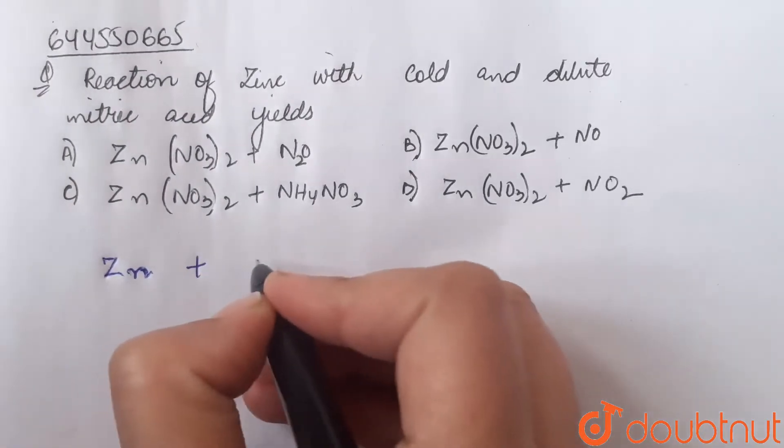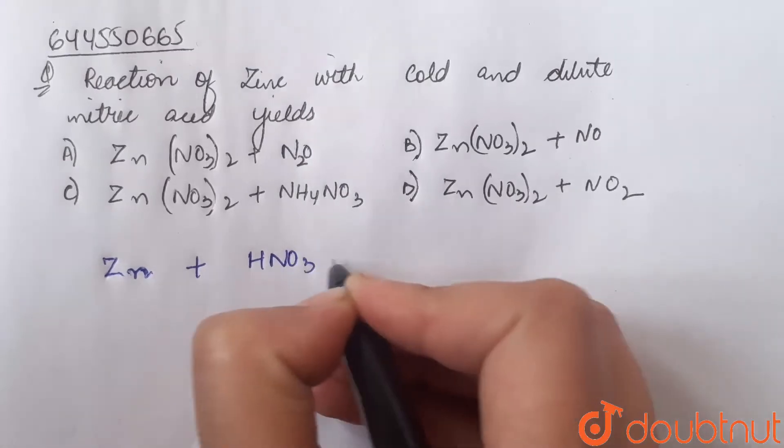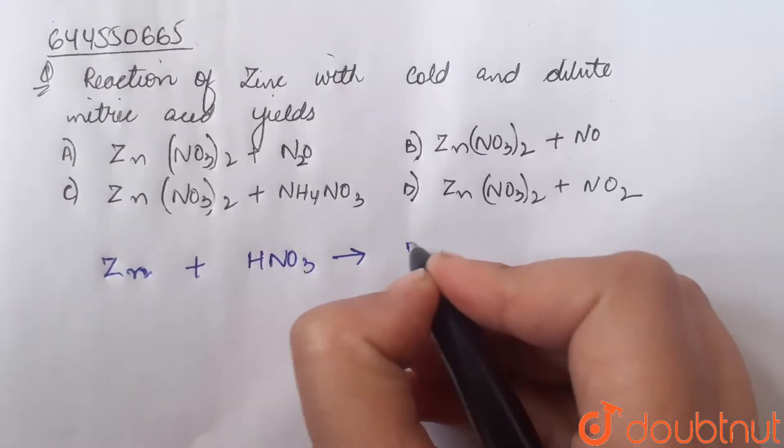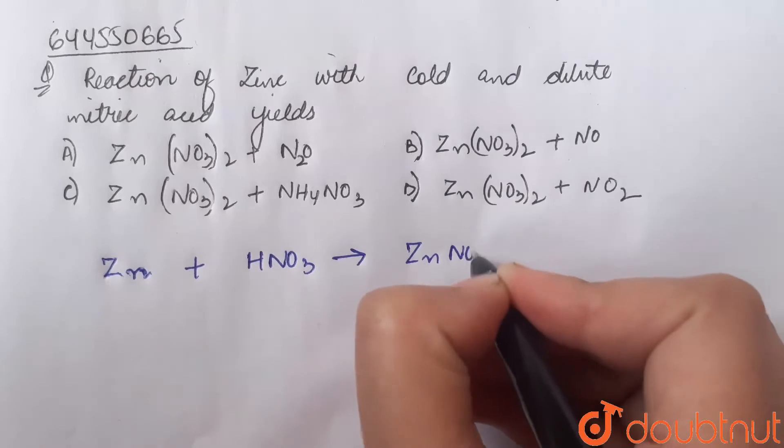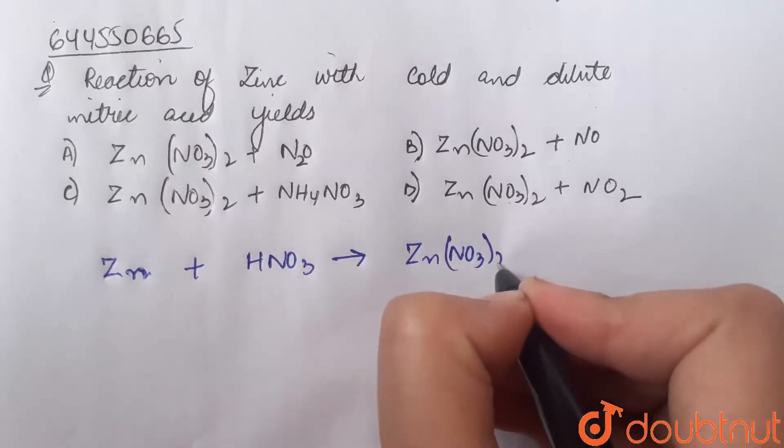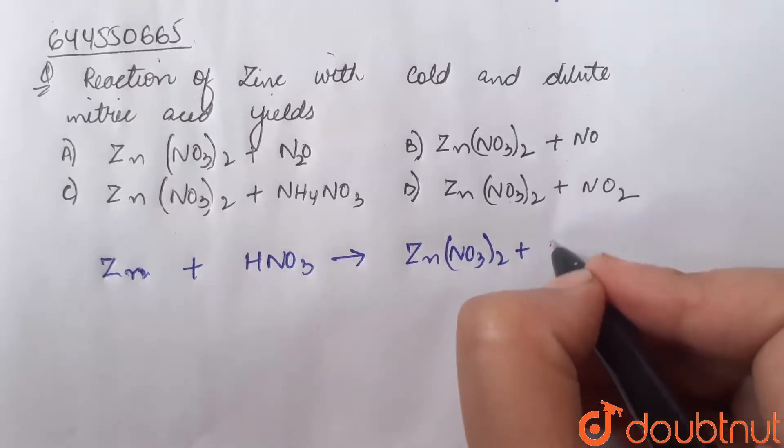When zinc reacts with cold and dilute nitric acid HNO3, they form zinc nitrate Zn(NO3)2 along with ammonium nitrate NH4NO3 and water.